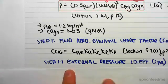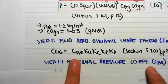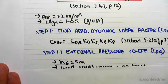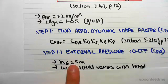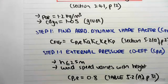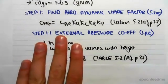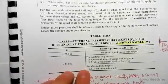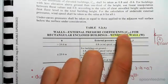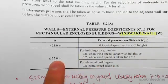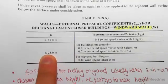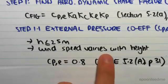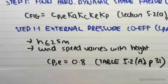Step 1.1 is to find C-P-E, the external pressure coefficient. The height of our structure is less than 25 meters — the total height was 20 meters — and the wind speed varies with height. Heading over to table 5.2a on page 31, this table presents C-P-E for windward walls. With H less than 25 meters and wind speed varying with height, as seen in the previous video where we designed wind speed at different heights, those conditions apply here.